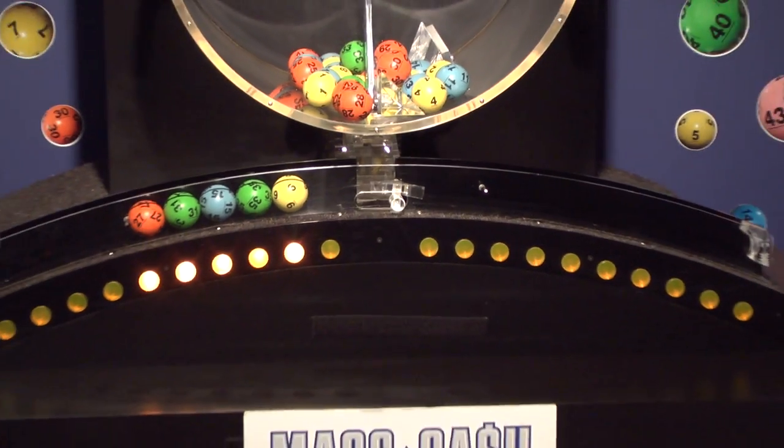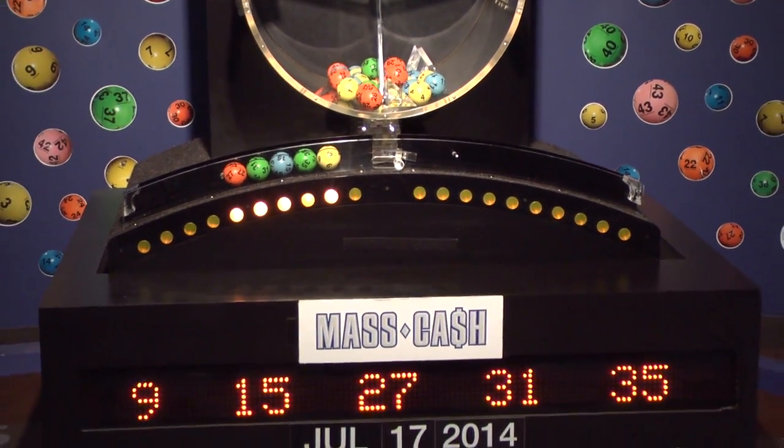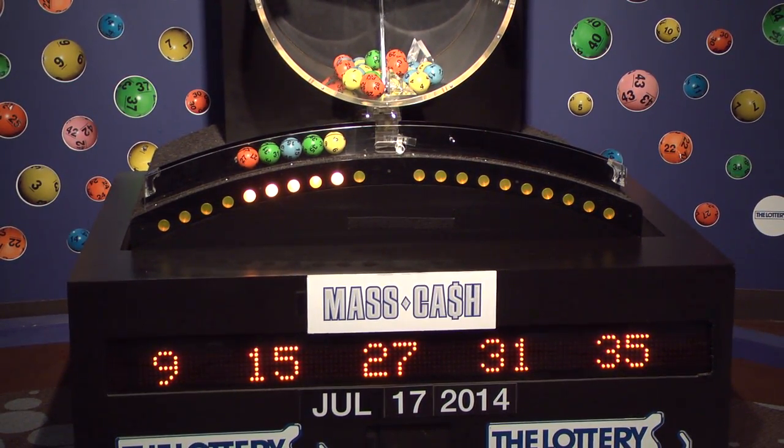Once again, the winning Mass Cash numbers for Thursday July 17th are 9, 15, 27, 31, and 35.